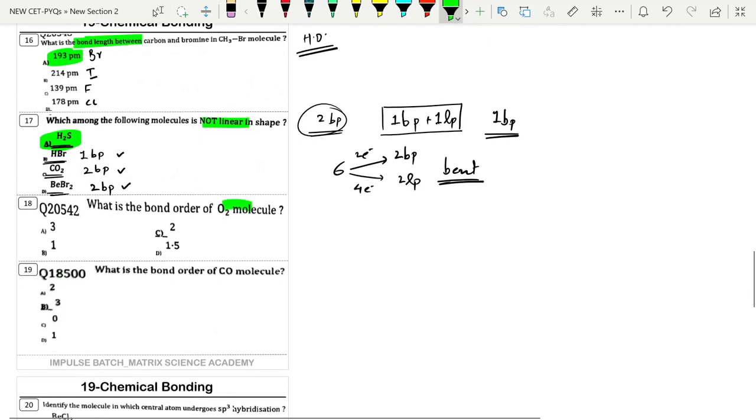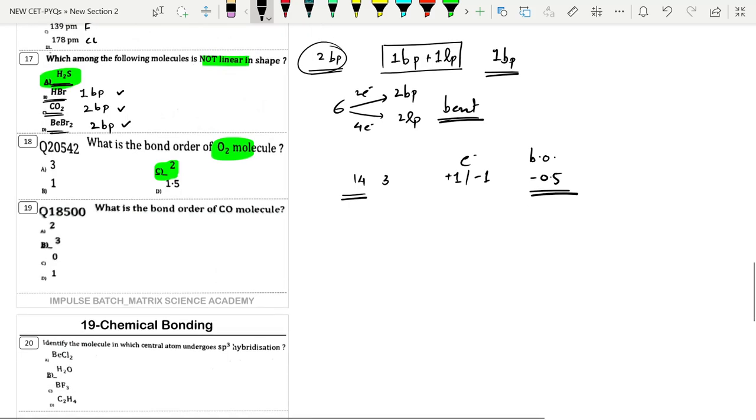Bond order for O2 molecule. We already did this. Directly it's 2. Using the shortcut: 14 electrons give 3 bonds, and from there electron plus 1 or minus 1, the bond order changes by minus 0.5.